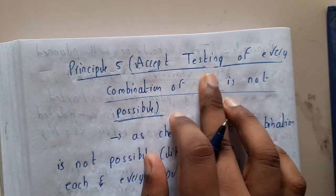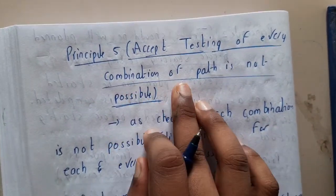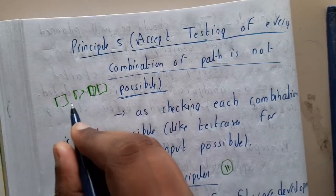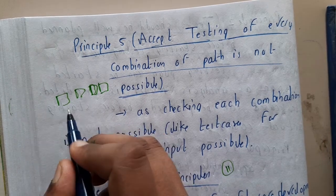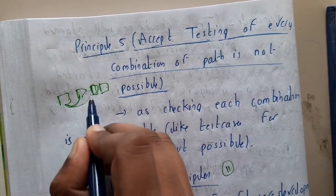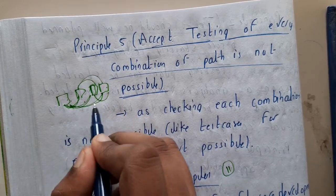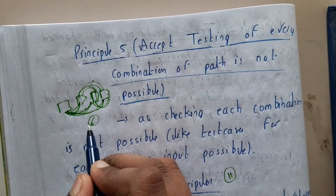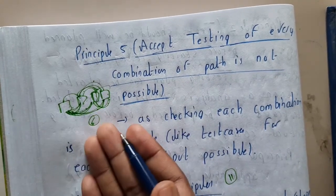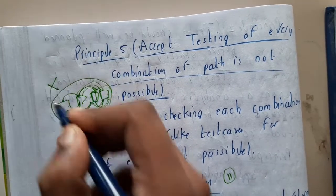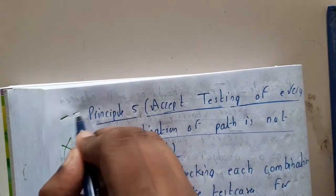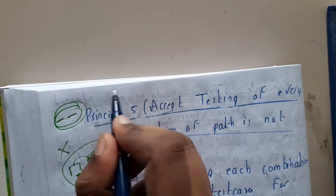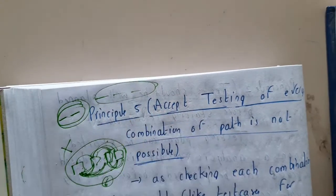The fifth principle is that testing every combination of paths is not possible. For example, if there are four modules and you want to combine each module individually, you'll get six combinations for pairs. For three-way combinations you get even more. Testing all combinations is not always the best option — check for similarities, and if there is a data transfer between modules then it is mandatory to test them. After combining all four modules, test at least once.